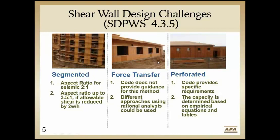Our force transfer approach — our focus for today — is another perforated approach, but it's not based on testing historically. Instead, it's based on rational analysis, which can vary quite a bit from design office to design office, engineer to engineer. What you generally see in the field are straps on the exterior of the wall, generally above and below your opening, transferring the tension force, with blocking on the inside transferring the compression force. The sheathing — not just the full height segments, but also above and below your openings — transfers the shear forces to create a single shear wall with hold-downs at each end.